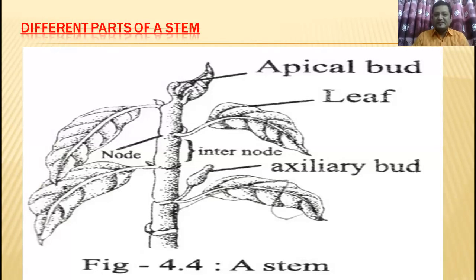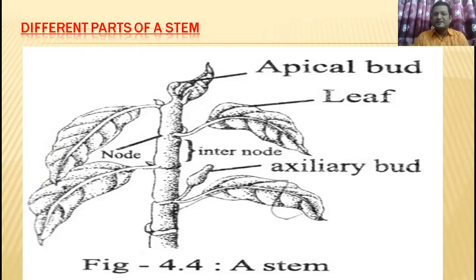Now, the different parts of a stem. Stems are another important part of plants. A stem contains branches, nodes, internodes, and leaves, as well as flowers and fruits. The upper portion of the stem contains the apical bud, leaf, node, internode, and axillary buds. Stems are very important because the leaves on the stem produce food by the help of sunlight, water, and the green pigment chlorophyll.